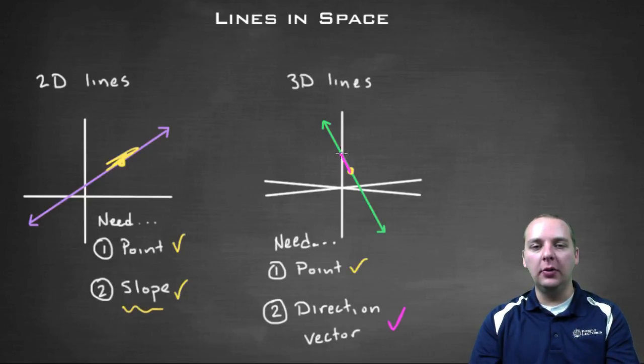So graphically it would be a little vector, it doesn't even matter how long it is really, that points in the direction of your line. And if we have these two things, then we can write the equation of the line, and I'm going to show you how to do that right now.